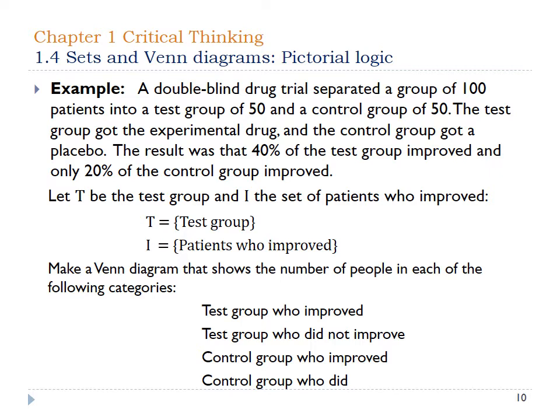Here's an example of a double-blind drug test that separated a group of 100 patients into a test group of 50 and a control group of 50. When looking at the groups for the Venn diagram, we need some kind of overlap and connection between the two things. So we're going to look at the test group and the patients who actually did improve, since the entire point of a drug test is to see who actually improved.